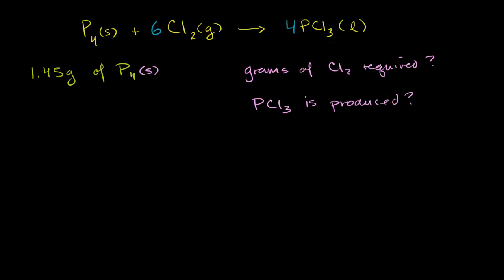Now that we have a balanced equation, the next thing we have to do is figure out how many moles of phosphorus we're dealing with. Because once we know the moles, we can use the stoichiometric ratios — which essentially says, for every mole of that, I need six moles of that, and for every mole of that, I'm going to produce four moles of that. So you want to get it all in terms of moles. Let's figure out how many moles of phosphorus we have on our hands.